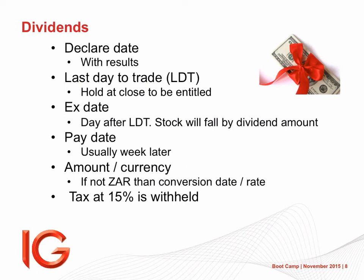The declare date is when the company publishes results and declares a dividend — the board approves it and they issue a SENS announcing that dividend. With that, they give you the last day to trade, or LDT. If you hold the share at the close of trading on that LDT, you receive the dividend. It doesn't matter when you bought the share — you could buy it in the closing auction. From when it's declared to when it's LDT, it's carrying a dividend — we call it cum div. The person selling it to you knows they're also selling away a dividend. As long as you hold it at the close of last day to trade, you are entitled to the dividend. You could sell the share first thing the next morning and still be entitled to it.